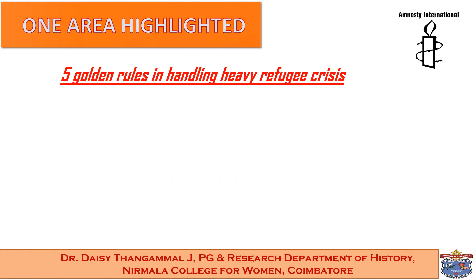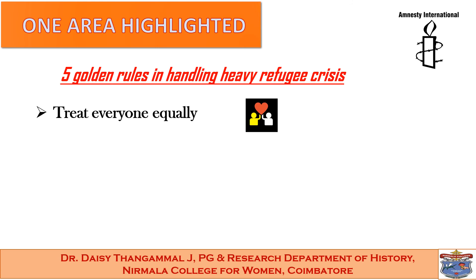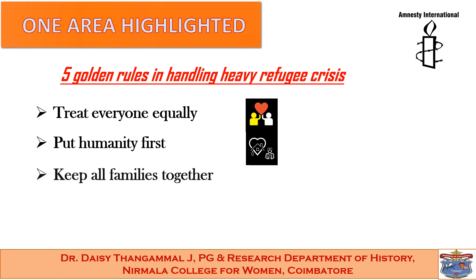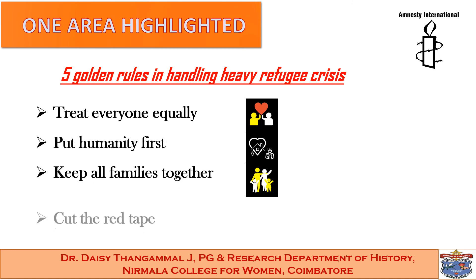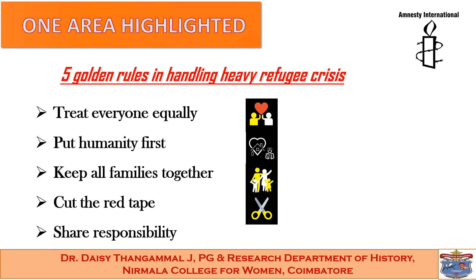One highlighted area is the five golden rules in handling a heavy refugee crisis: first, treat everyone equally — particularly refugees; second, put humanity first; third, keep all families together; fourth, cut the red tape; and fifth, share the responsibility.